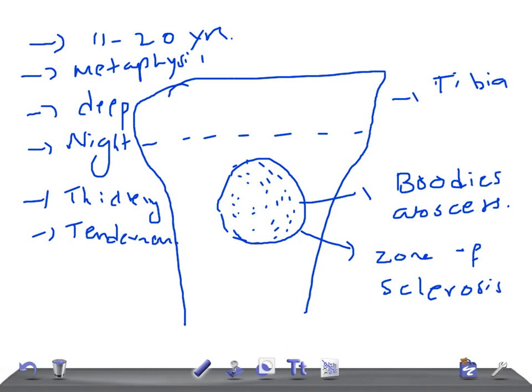This is the zone of sclerosis. The rest of the bone is normal, but the only thing you can see is the zone of sclerosis and the infection, the pus over here, and this area will be lucent on x-ray.